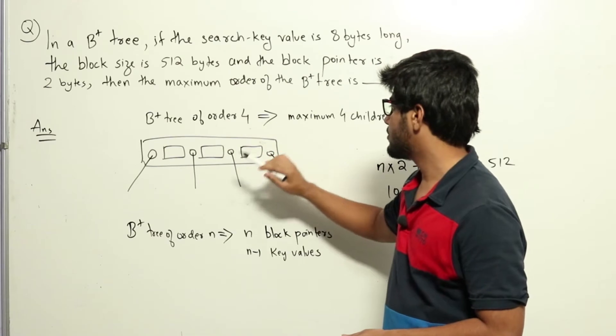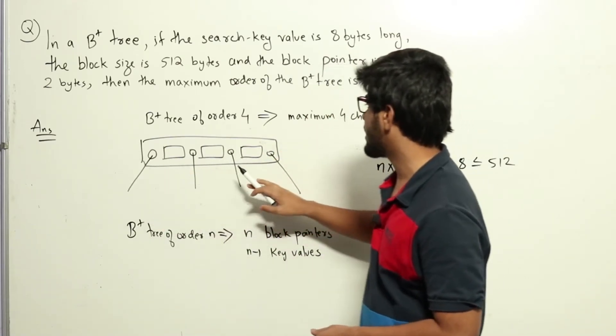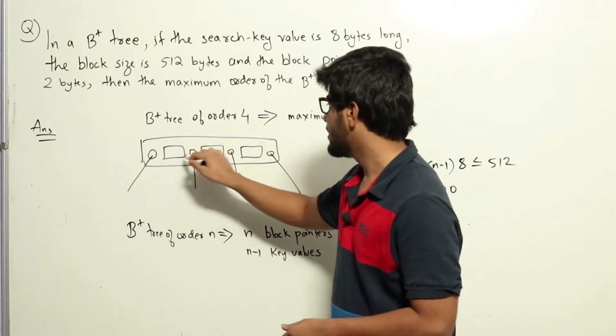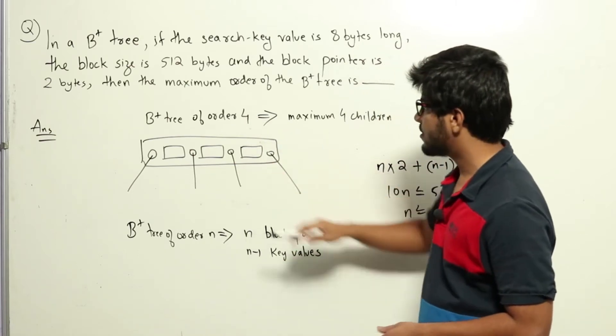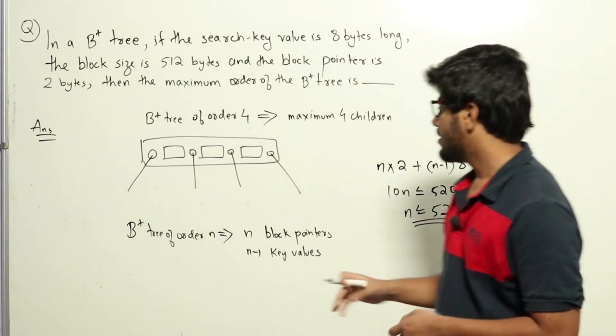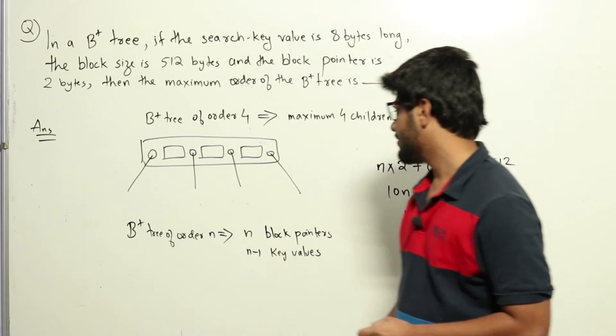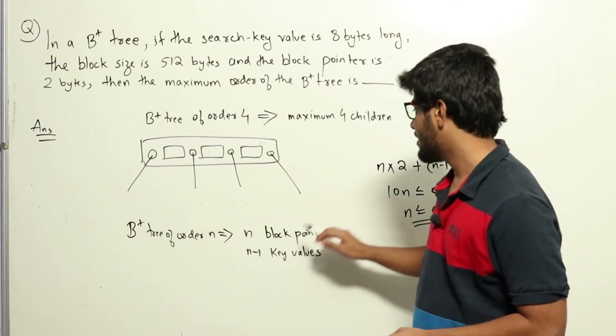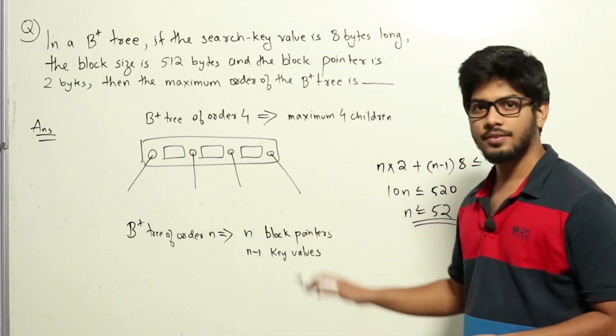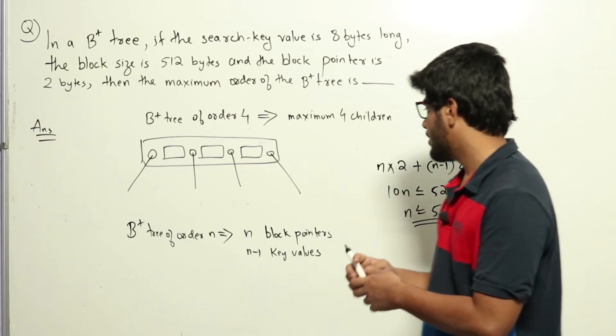If there are four children, that means there can be a maximum of four minus one, that is three key values. Based on this, we make a general formula: for a B+ tree of order n, there will be n block pointers and n minus 1 key values in an internal node.